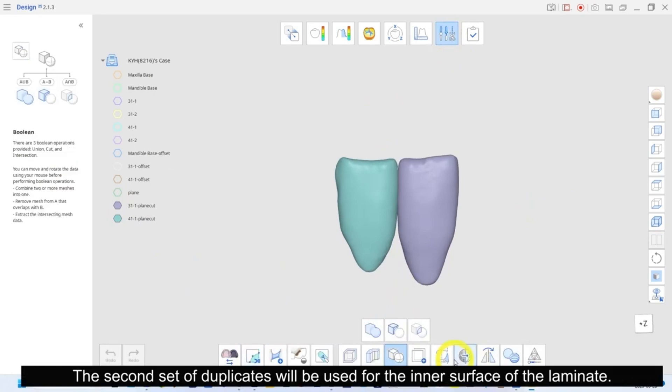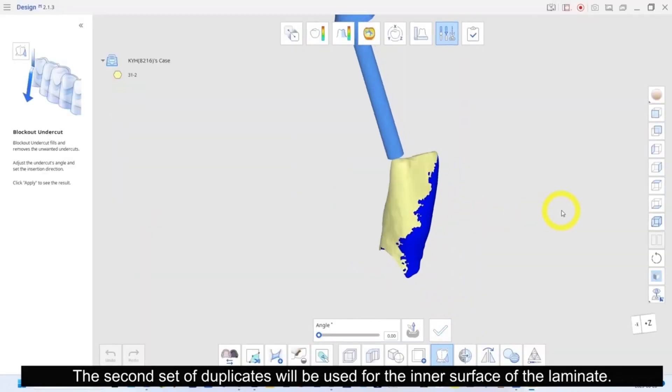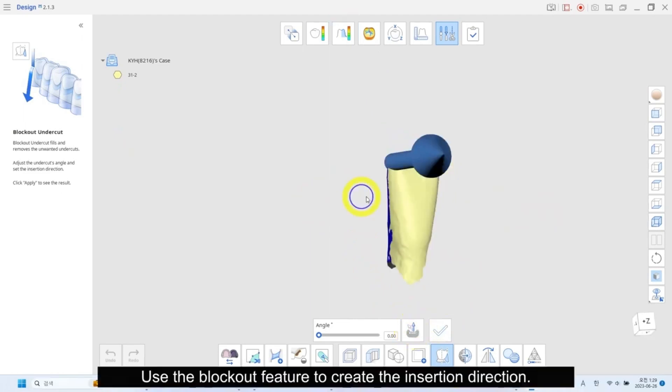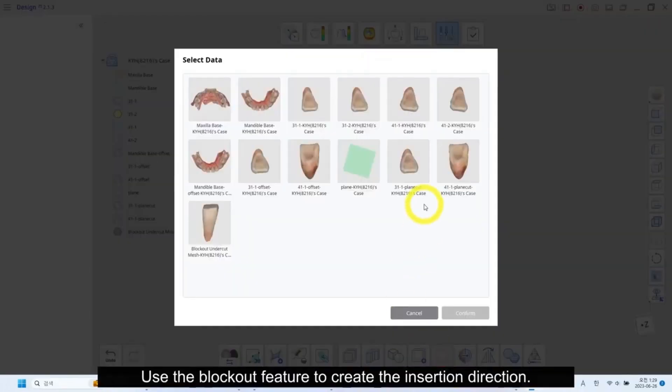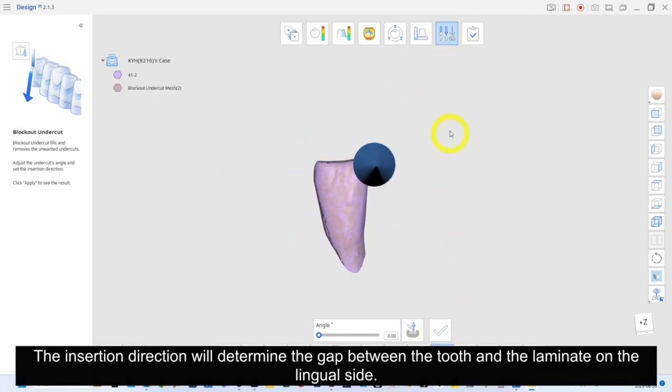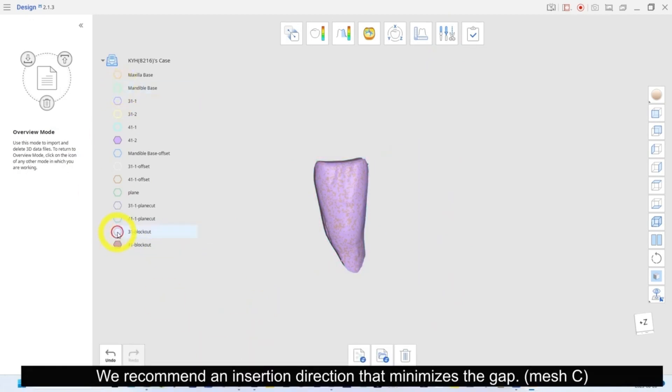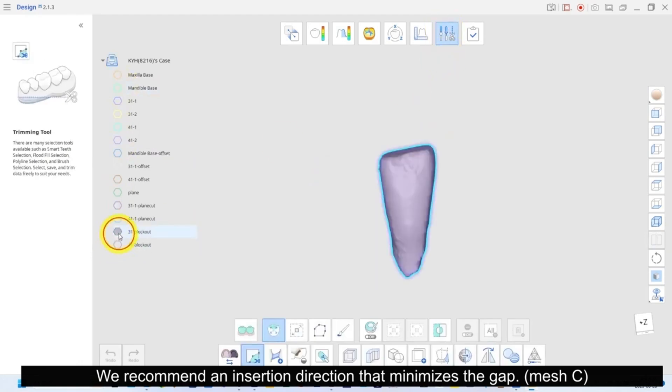The second set of duplicates will be used for the inner surface of the laminate. Use the blockout feature to create the insertion direction. The insertion direction will determine the gap between the tooth and the laminate on the lingual side. We recommend an insertion direction that minimizes the gap.